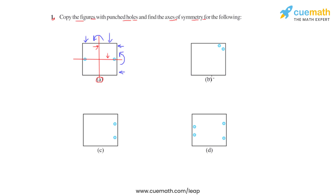So for figure A, we can conclude that it has more than one axis of symmetry, and these two lines are the axes of symmetry. Moving on to figure B: based on the position of the punched holes and the symmetry of this figure, if we join the two opposite vertices using a diagonal line, the figure is divided into two equal halves, and folding about this line makes both halves coincide. So this diagonal line is the axis of symmetry for figure B.